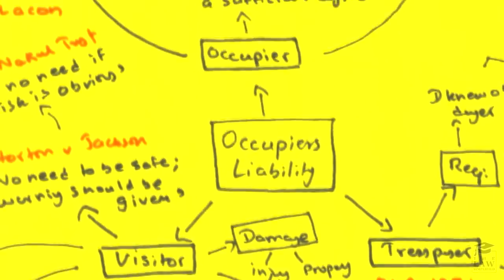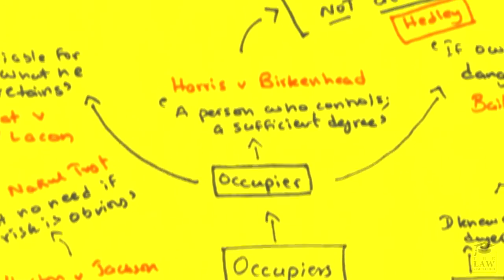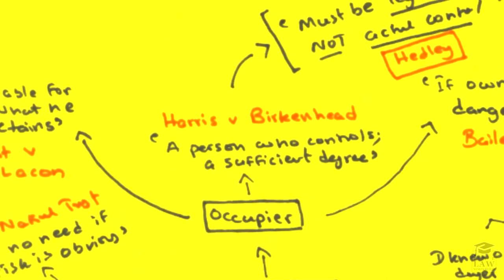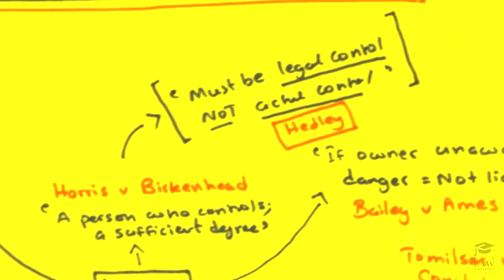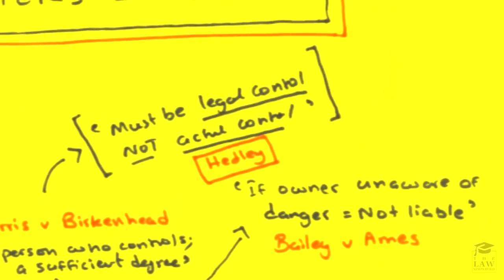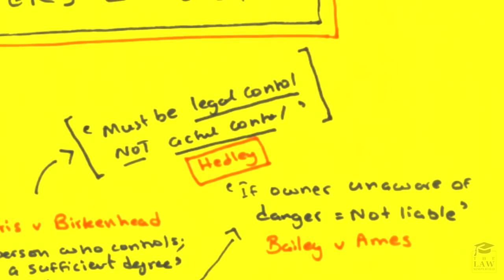Firstly, we need to determine who an Occupier is in relation to this topic. In Harris v Birkenhead, it was noted that an Occupier is a person who controls to a sufficient degree the land in question. If you look at the literature of Headley, what he considers as an Occupier is a person who has legal control and not actual control. There is a distinct difference in this, so have a look at it in the case summaries.